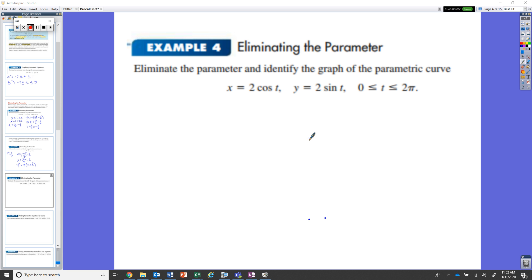However, as you can kind of see in this example here where it's asking to eliminate the parameter and then of course identify the graph of it, you're solving for t with sine and cosine. Not saying it's impossible. What I'm saying though is that it could be a little bit tricky.